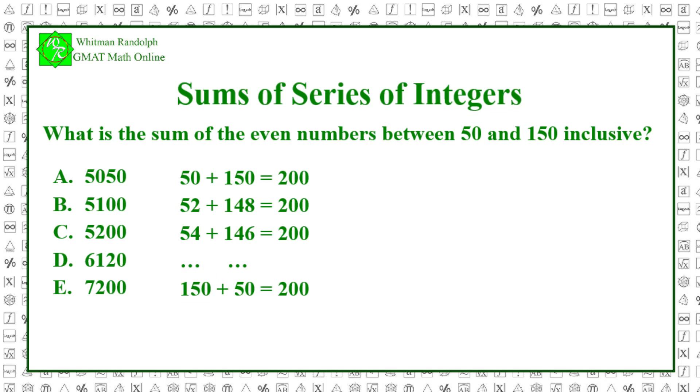Then we start from the last number 150 followed by 148 and so forth down to the first 50. Now we add the pairs. 50 plus 150 equals 200. 52 plus 148 equals 200. 54 plus 146 equals 200 and so forth. And we see that each of these pairs sums to 200.